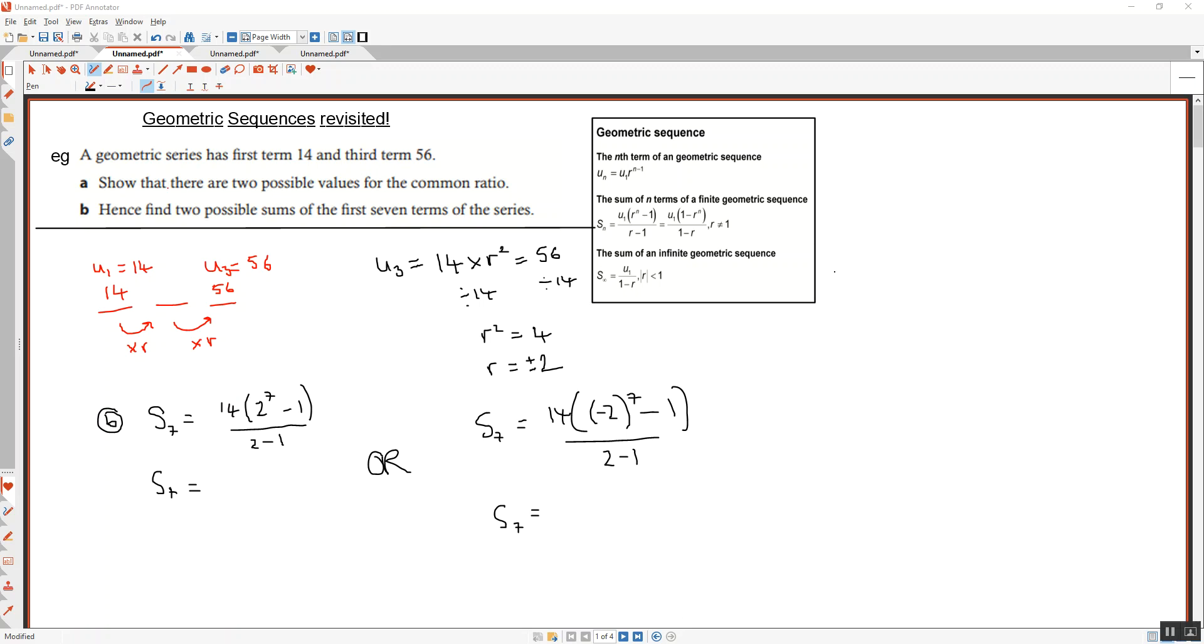You need to be careful here when you're putting this into the calculator that you use your brackets in the correct places. Okay, Lily has just asked about the second term. If we're using r as being positive 2, second term is 28, multiplying that by 2 gives us 56. If we are using negative 2, I get negative 28, but multiply by negative 2 again, I still get back to my positive 56 because the negative times the negative is positive.